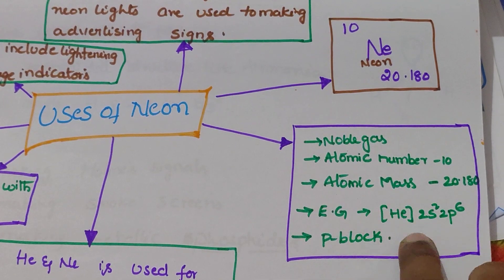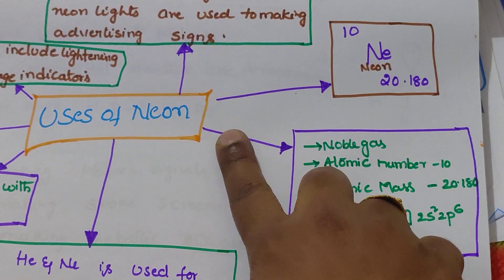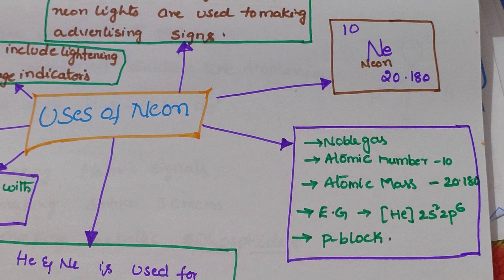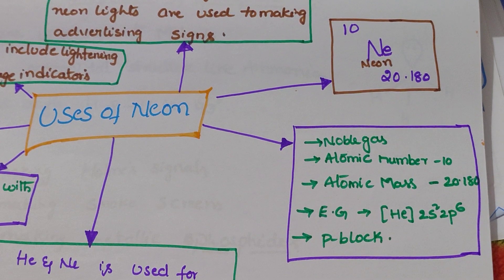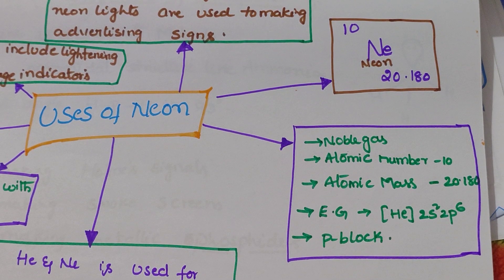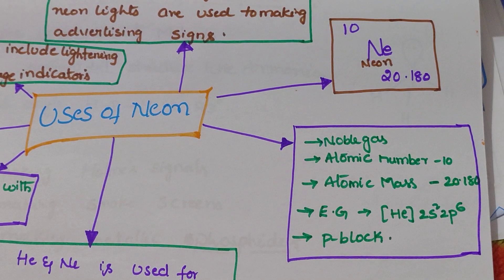So it is a homoatomic gas. Questions to consider: What is neon? What does neon belong to? What is the atomic number of neon? How many electrons are in the valency shell of neon?